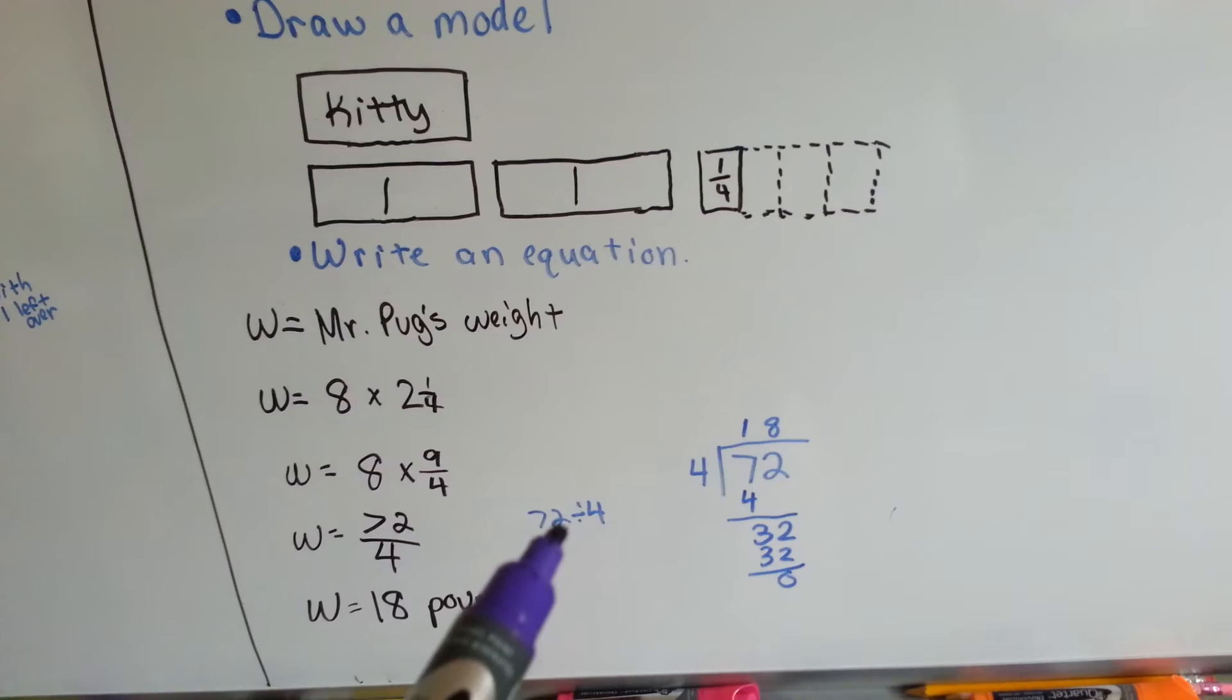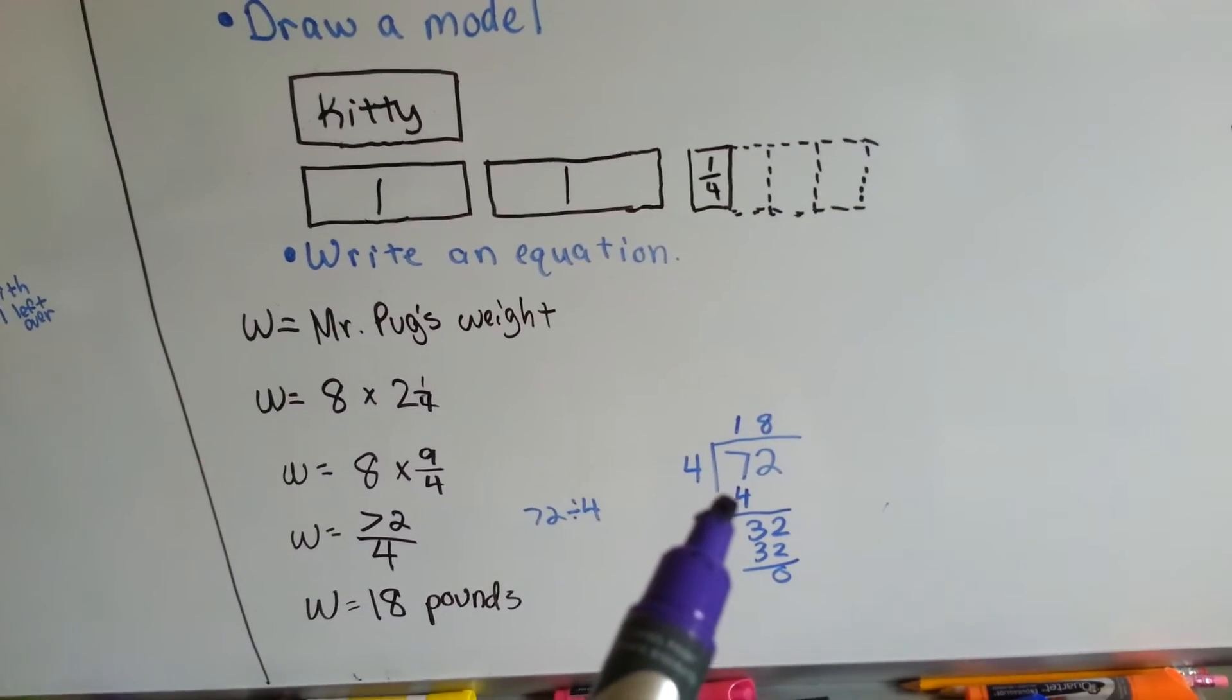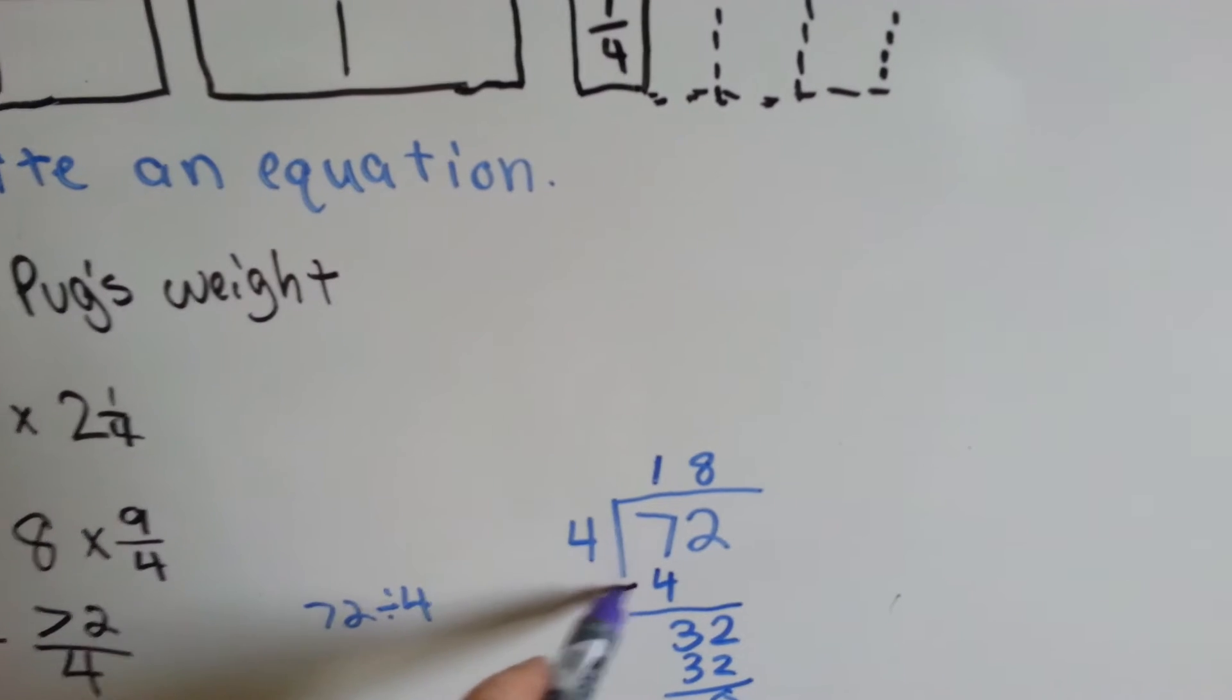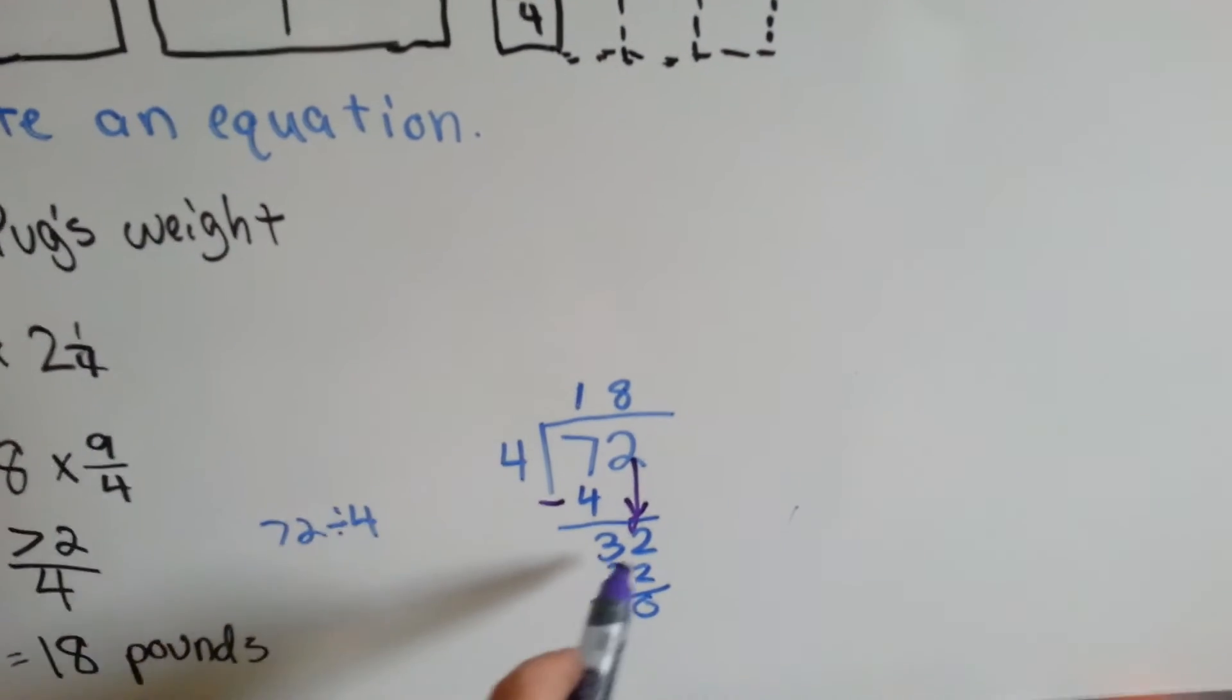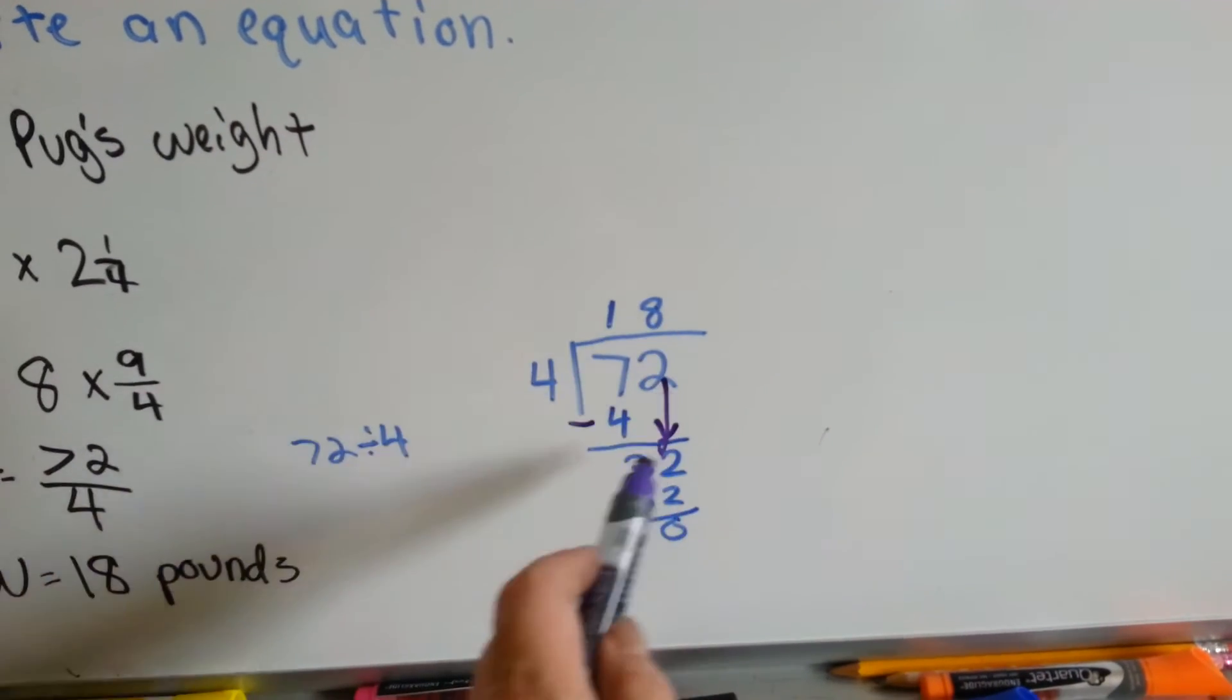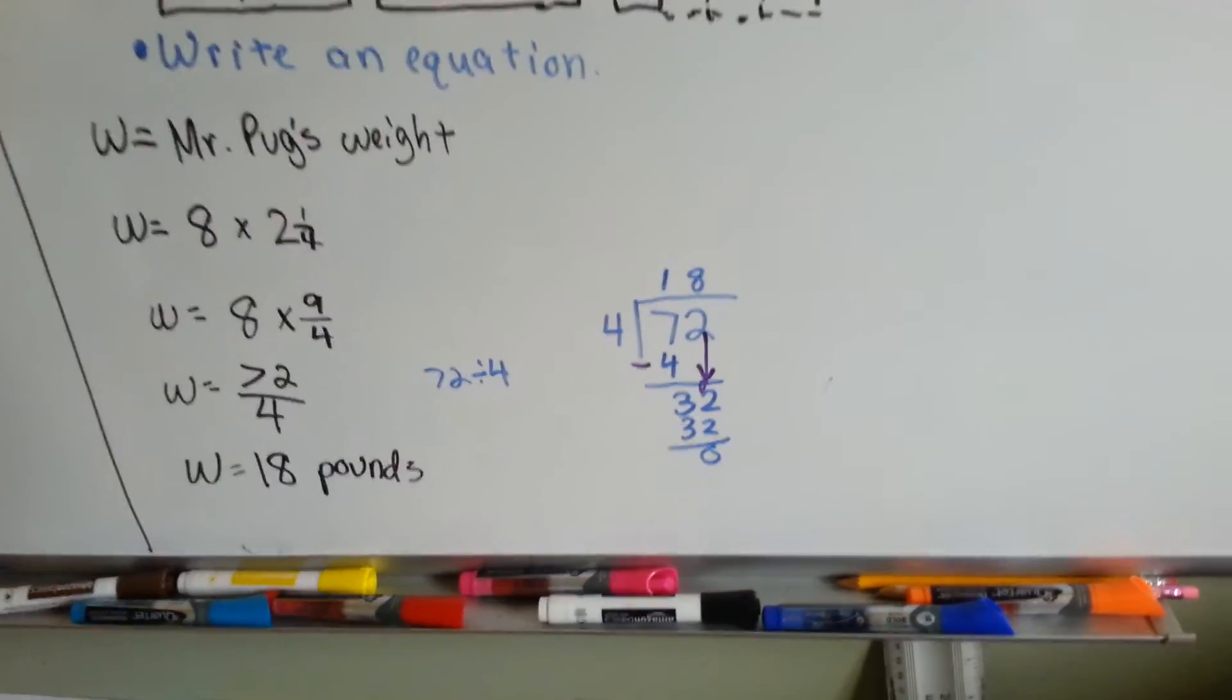Four goes into seventy-two. Four goes into seven one time. We put the four here and do our subtraction to get three. Now the two comes down. Now we have thirty-two. Four goes into thirty-two eight times. Four times eight is thirty-two with a remainder of zero. So Mr. Pugs is eighteen pounds.